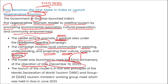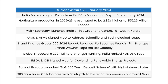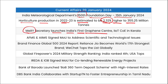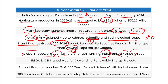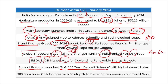Quick one-liner revision: IMD's 150th Foundation Day was on 15th January. Horticulture production in 2022–23 estimated to be 2.32% higher than last year. MeitY launched India's first graphene center and intelligent IoT Center of Excellence, both in Kochi, Kerala. AFMS and AIIMS signed an MOU to address scientific and technological issues. Brand Finance Global 500 2024 report: Reliance Jio secured 17th position; WeChat secured first position globally. Global Firepower 2024 military strength ranking: India ranked 4th; USA topped, then Russia, China, India. IREDA and Indian Overseas Bank signed MOU for co-lending renewable energy projects.